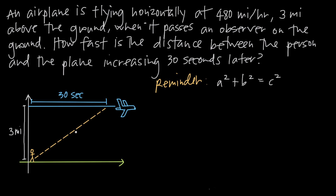I've gone ahead and drawn a diagram of what we're talking about. We have the ground here and a person standing on the ground. We know that the airplane is flying 3 miles above the ground, so we have this distance of 3 miles between the ground and the airplane, which is flying perfectly horizontally — not increasing or decreasing in height, staying at this constant 3 miles above the ground.